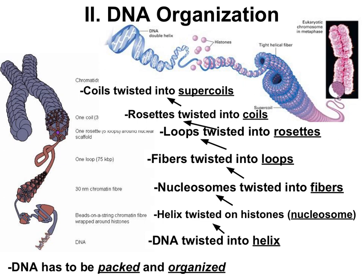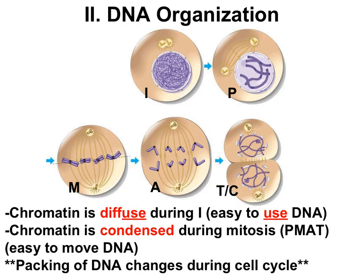It's not important to memorize all of these levels of DNA structure, but we're talking about them because the packing of DNA changes throughout the cell cycle. When DNA is being used, the DNA is less packed but still organized. During interphase, the chromatin — DNA plus histones — is spread out. The proper term for spread out chromatin is diffuse chromatin. Having the chromatin spread out allows for easy access to the DNA to be copied during S phase, and for genes to be copied into RNA during protein synthesis.